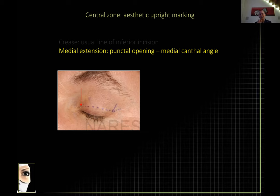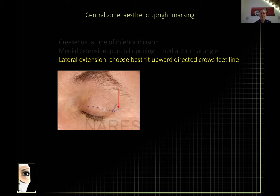Make sure your mark doesn't extend to that concavity near the medial canthus. The lateral canthus depends on how much skin you have — if there's excessive skin beyond the lateral canthal angle, you'll need to taper it up using the best crow's feet line you can find. Use the crow's feet line that goes upward, never one that goes downward, because that looks sad and drawn down.